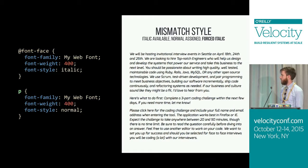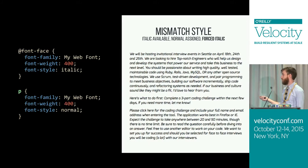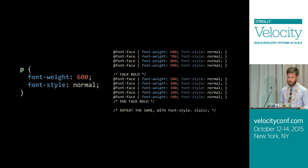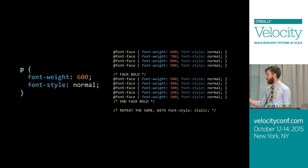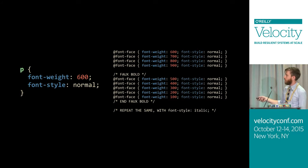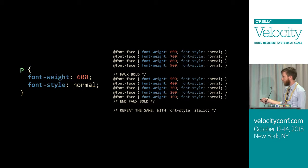The same happens for italic — if you want normal and the only thing available is italic, it will render italic. On the higher end of the font-weight spectrum, if your paragraph wants a bolder weight, it starts by counting up: 600, 700, 800, 900. If it doesn't find anything, it goes 500, 400, 300, 200, 100.